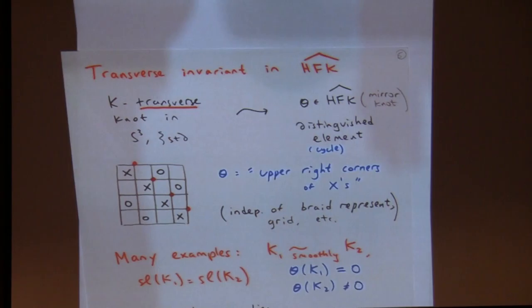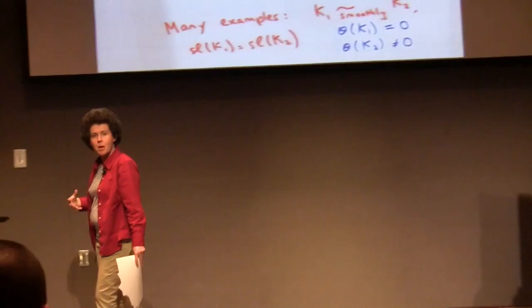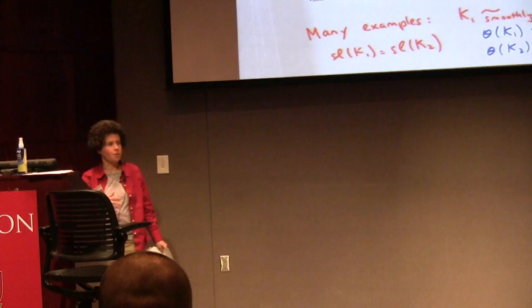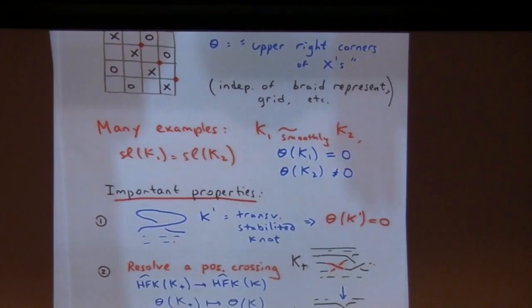Despite this easy definition, it turns out to be a very powerful invariant. There are many examples of knots where this invariant exactly detects the phenomenon of two knots being smoothly isotopic with the same self-linking number, but not transversely isotopic — for one knot the invariant is zero, for the other it's non-zero. That situation can be easily detected by a computer. Now I want to tell you how the properties of these invariants relate to braid monodromy.